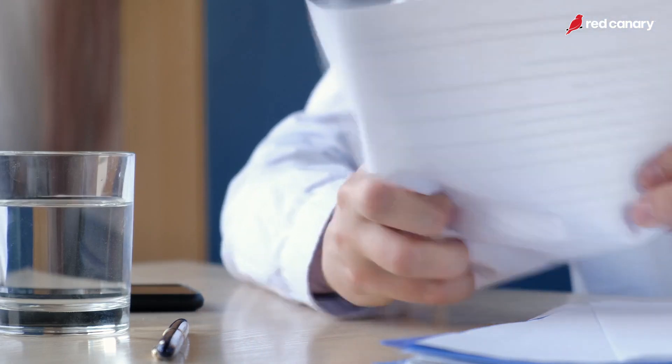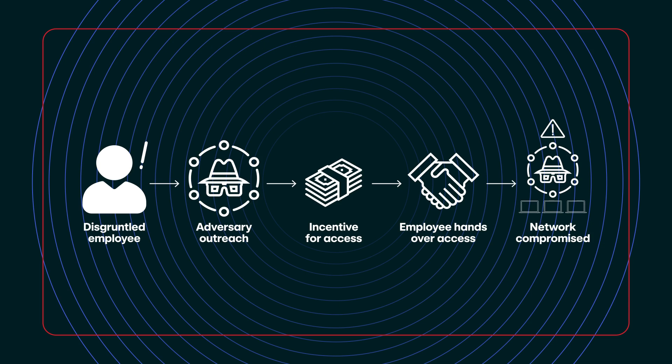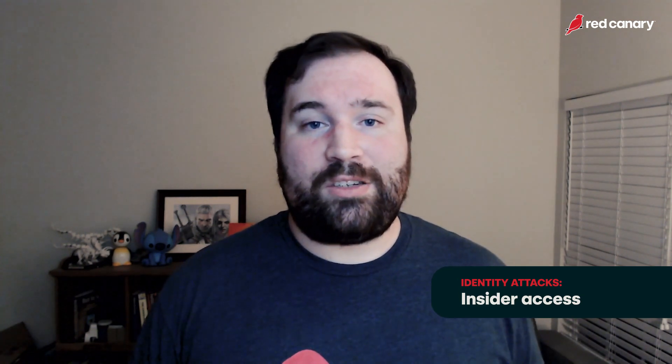An insider threat is when an authorized user uses their access for malicious purposes. For example, if I was an authorized user for my business and was unhappy with my pay, I might find someone willing to pay a lot of money for access to my business. I might install TeamViewer or some remote access software and let that adversary log in as me to do something under my account. In these kinds of attacks, an adversary can use that access to move around a network, deploy ransomware, and use that legitimate person as a foothold to carry out their malicious deeds.